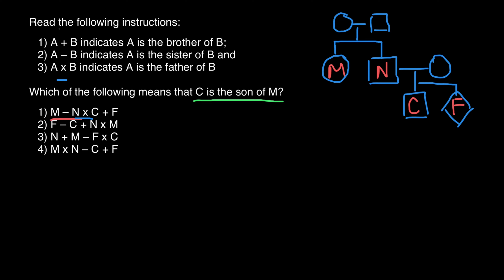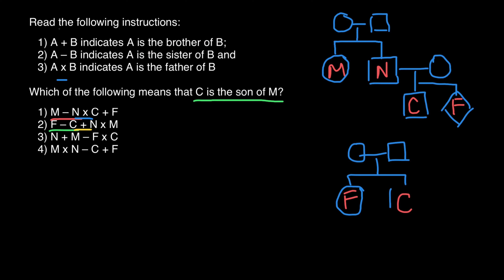F minus C means the first is a sister of the second, so F is a sister of C. We add parents here. C plus N: the plus sign indicates the first is a brother of the second, so C is a brother of N. We don't know the gender of this third sibling.